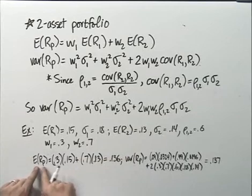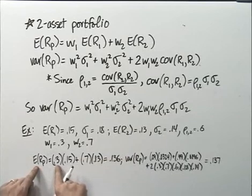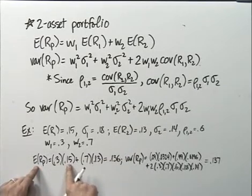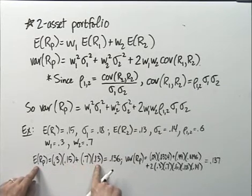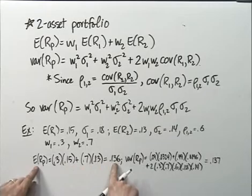The expected return is the portfolio weight times the return on asset 1, plus the portfolio weight times the return on asset 2, which gives an expected return of 0.136, or 13.6%.